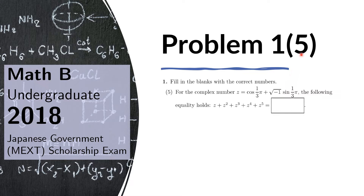Problem 5 of 1. For the complex number z equals cosine of one-third pi plus the square root of negative 1 times sine of one-third pi, the following equality holds: z plus z squared plus z cubed plus z to the 4th plus z to the 5th equals blank.